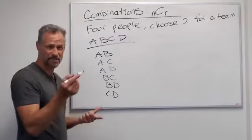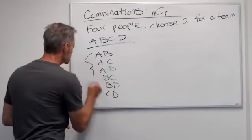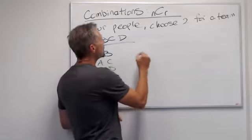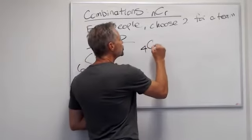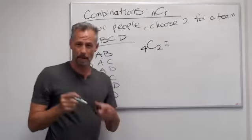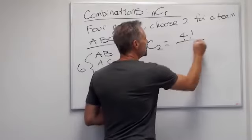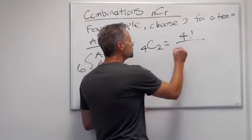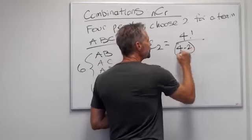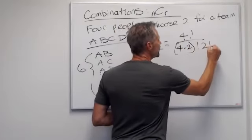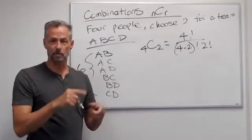Formula-wise, here's how we figure that out. If I do four choose two, by formula, it's going to be four factorial on the top. The bottom, four minus two factorial times two factorial. That's the formula we just did.